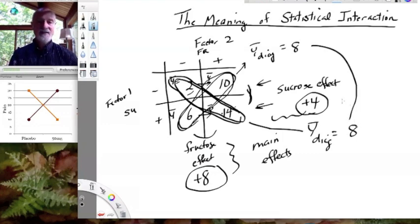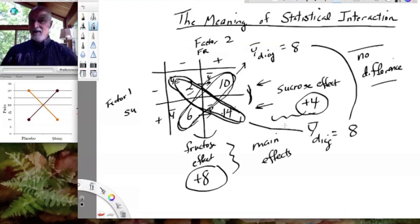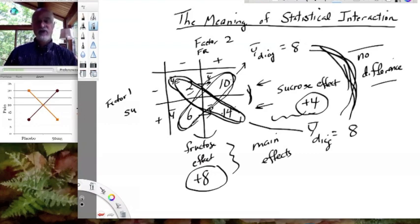So if I contrasted these diagonals, there's no difference, right? There's no difference between these diagonals. And in fact, that is the result of the perfectly additive effects of fructose and sucrose on these means. We don't have a difference in the effect of fructose depending on the level of sucrose. If we did, we would get different means here. All right. So let's create that situation.